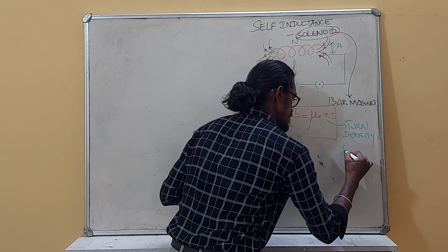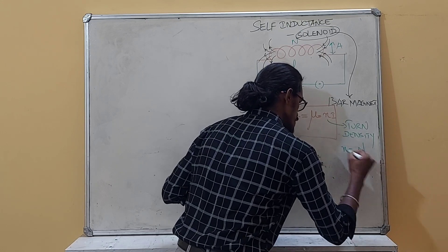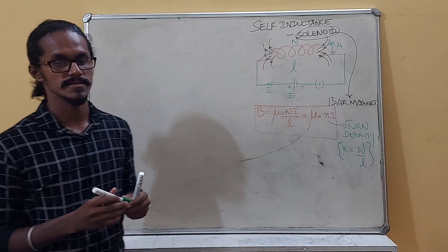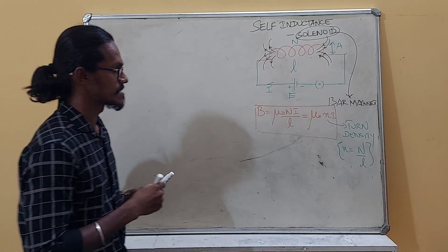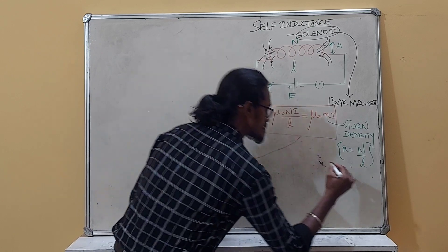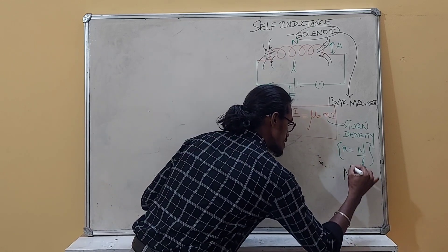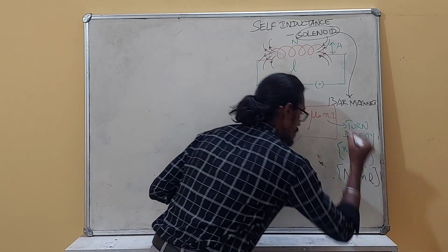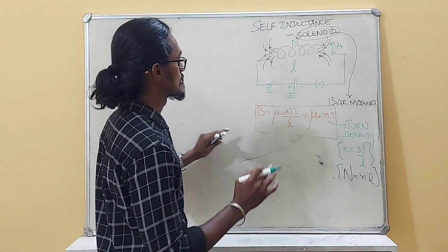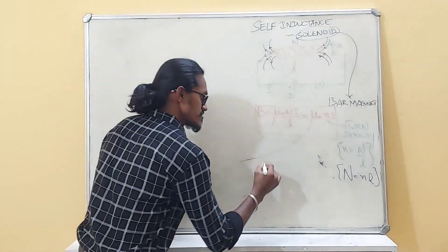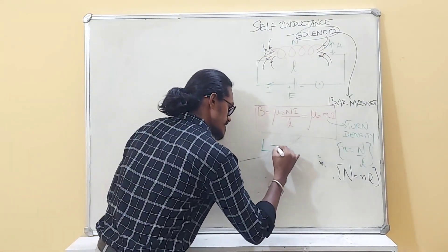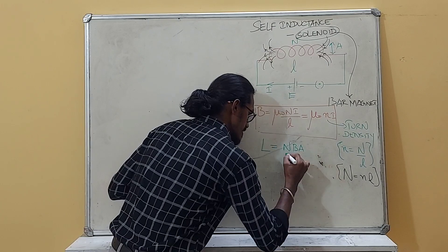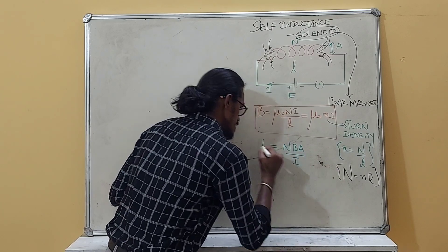Turn density means total number of turns per unit length. So we can express capital N in this form: N = n × l. The self-inductance of a solenoid is given by L = NφA/I, calculated when current is constant through the circuit.